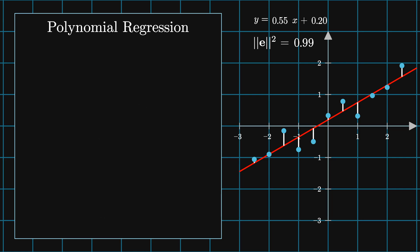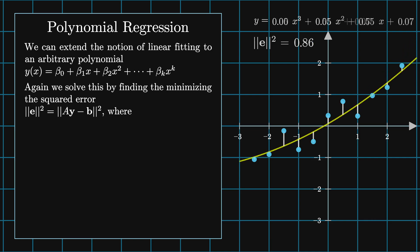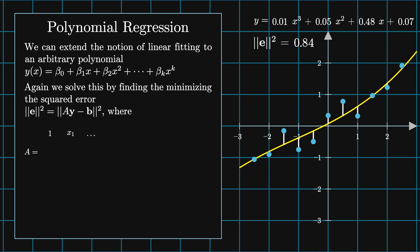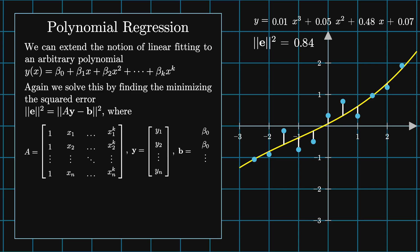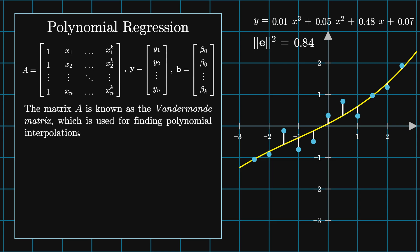This process can be easily extended to a general polynomial fit: y equals the sum from i equals 0 to k of beta_i x^i. Here we're fitting the same data by a quadratic and then a cubic polynomial. The process is the same as before — we want to minimize the squared error. Now the matrix A is an n-by-(k+1) matrix, where the i-th row is (1, x_i, x_i^2, ..., x_i^k), and b is the column vector of coefficients beta_0 through beta_k. The matrix A is called the Vandermonde matrix, which is used for finding polynomial interpolations.